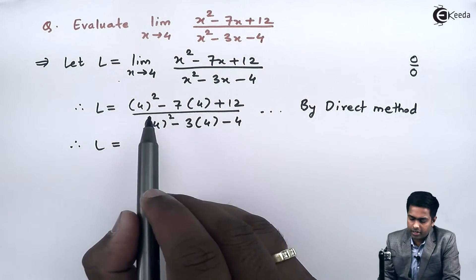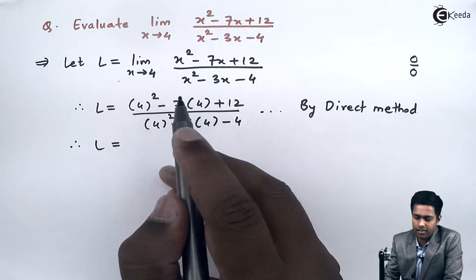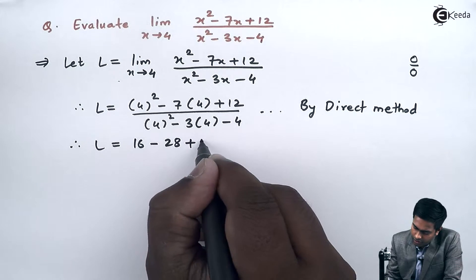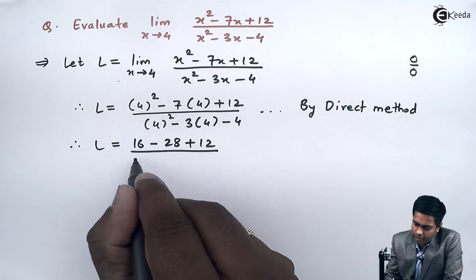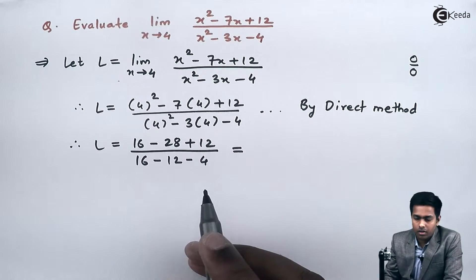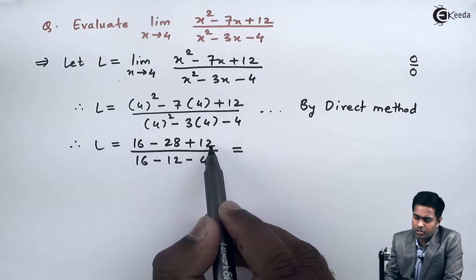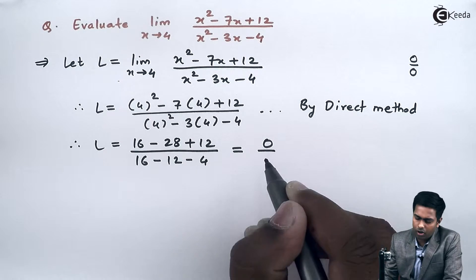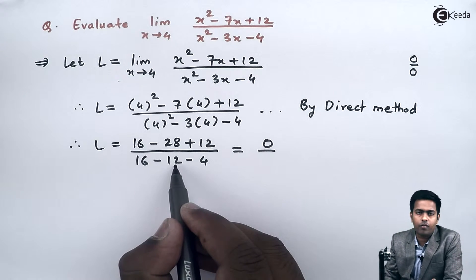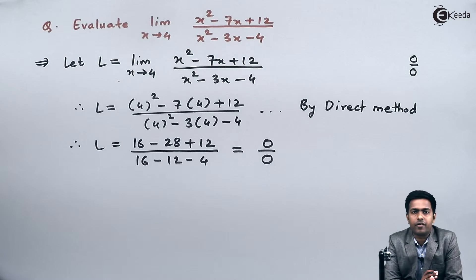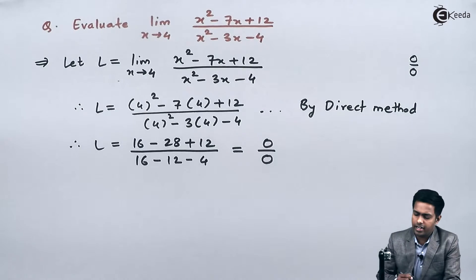In the numerator we get 4 squared, that is 16, minus 28 plus 12, upon 4 squared, again 16, minus 12 minus 4. This gives us 16 plus 12, that is 28, minus 28, which is 0, upon 16 minus 12 minus 4, which is also 0. So this limit is giving us the value 0/0, which is called the indeterminate form.